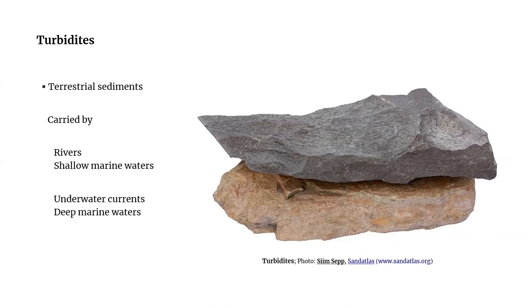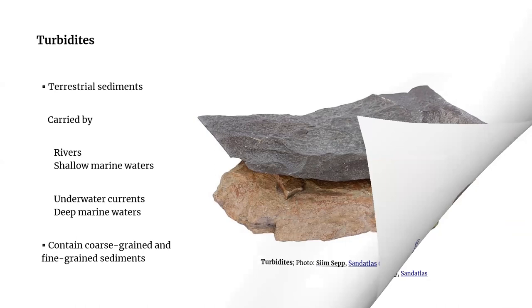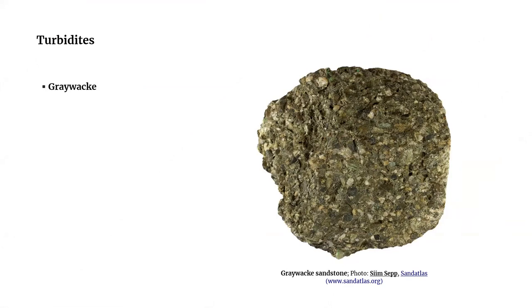Turbidites contain all sorts of sediments, from large boulders to fine particles. A particular kind of rock associated with turbidites that is encountered almost everywhere in the Southern Uplands is greywacke. It's a kind of sandstone that is very hard, very coarse, and contains a random mixture of grains that are very poorly sorted.